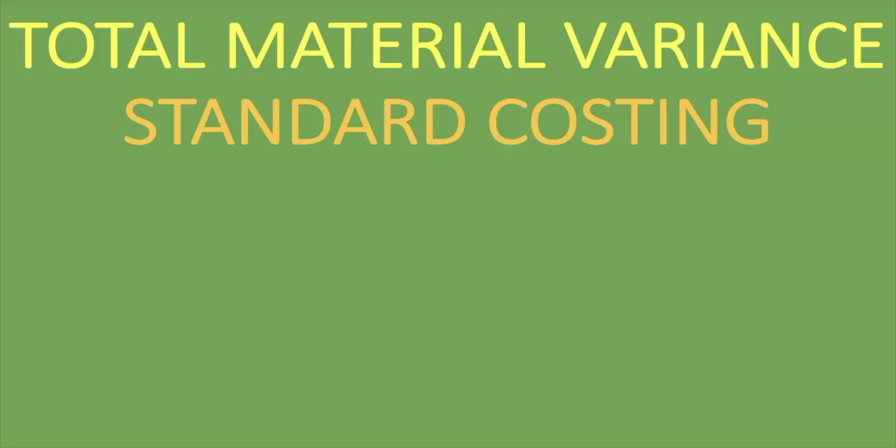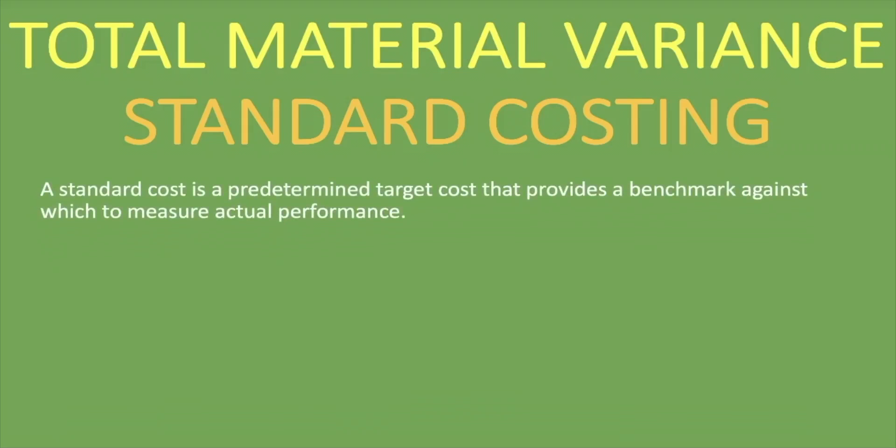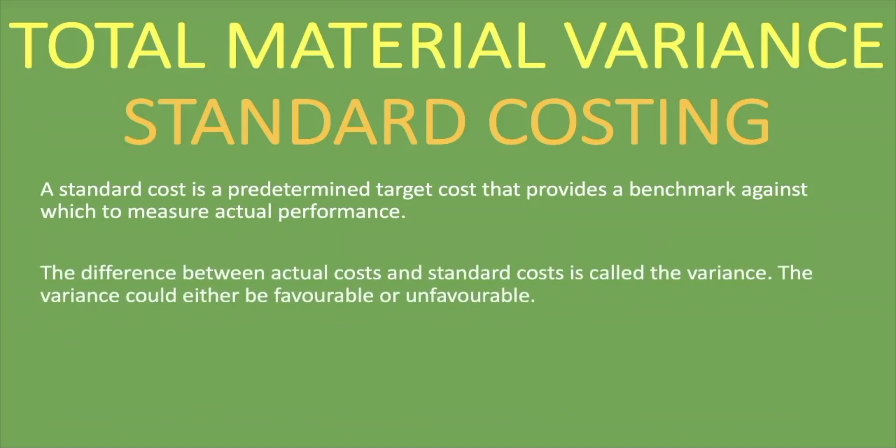What is a standard cost? Well, as we've mentioned in many of our other videos, a standard cost is a predetermined target cost that provides a benchmark against which to measure actual performance. When we look at variances, we say that the difference between the actual costs and standard cost is called the variance. The variance could either be favorable or unfavorable, and that is what you have to determine as you do your calculations.